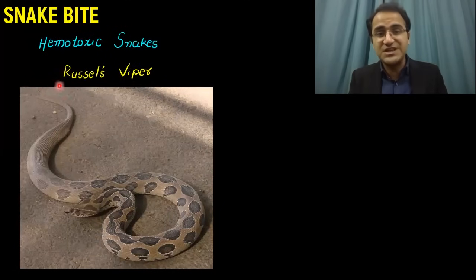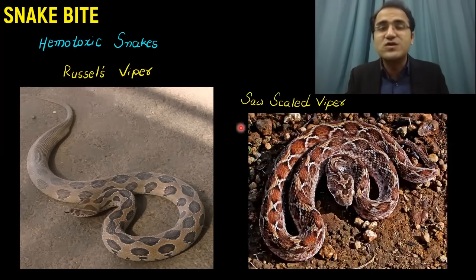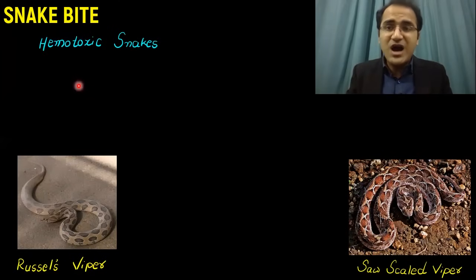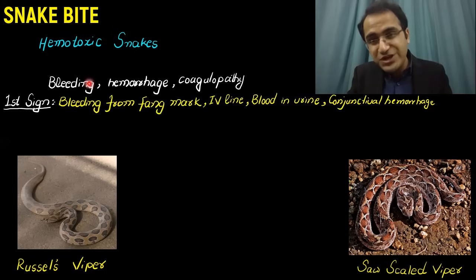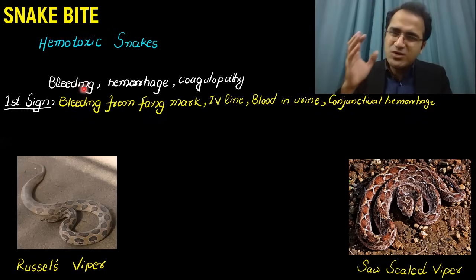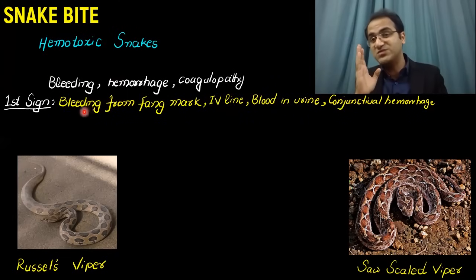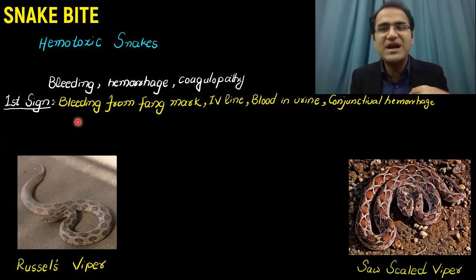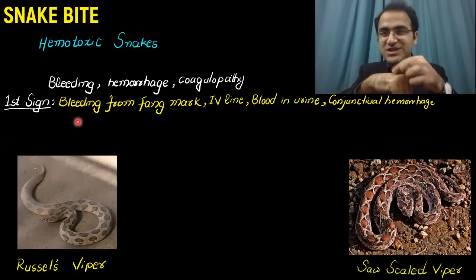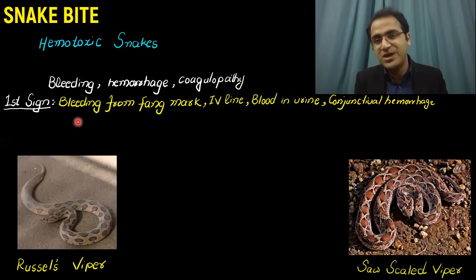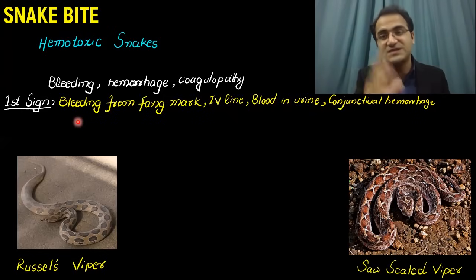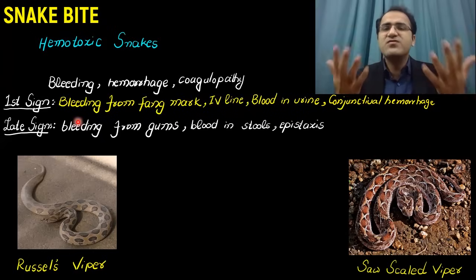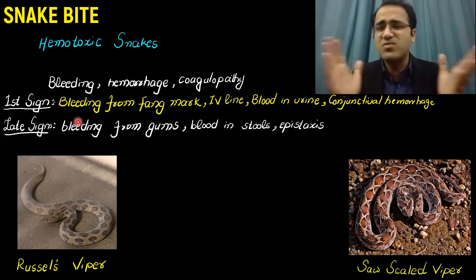Hemotoxic snakes include Russell's viper and saw-scaled viper. They cause their prey to bleed to death through coagulopathy, bleeding, and hemorrhage. The first sign in these patients is bleeding from the bite mark itself, or bleeding from the IV line insertion point. These patients may also develop conjunctival hemorrhages or hematuria. Advanced signs include bleeding from the gums, stools, epistaxis, and bleeding from all pores of the body.